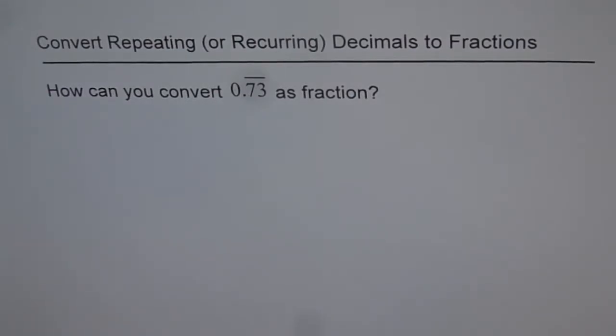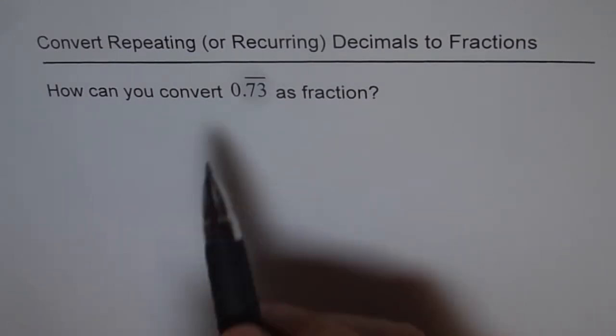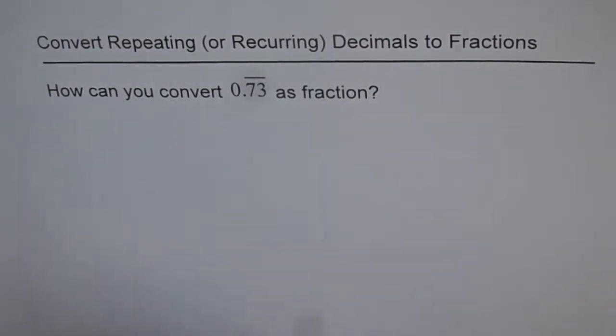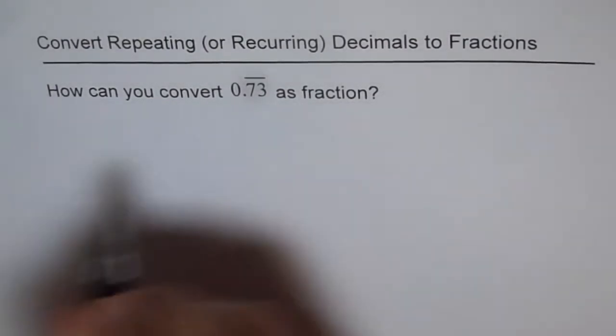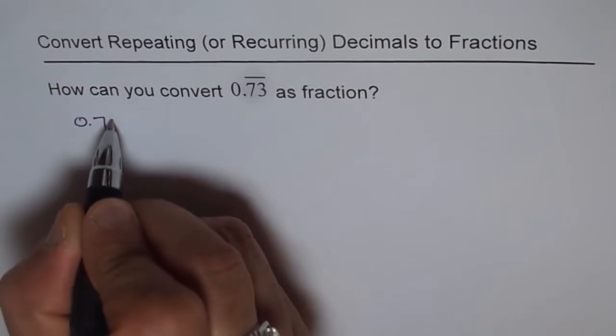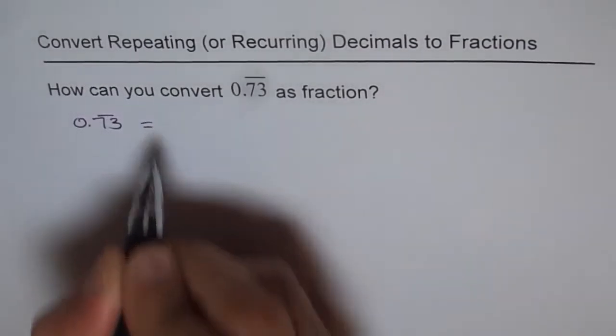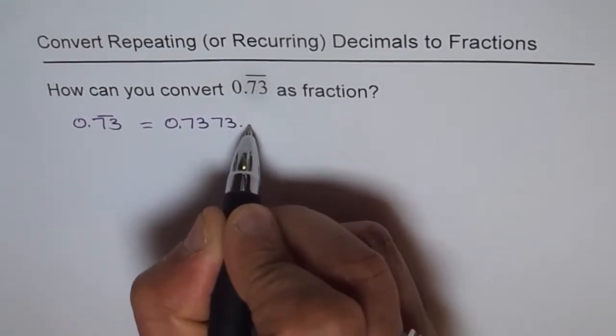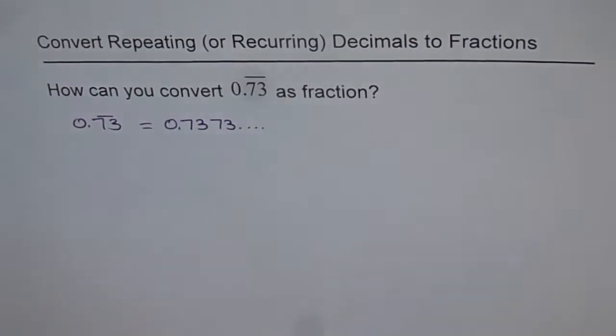Convert repeating or recurring decimals to fractions. How can you convert 0.73 recurring as a fraction? Now, 0.73 recurring can be written as 0.737373... repeating, right? And we'll try to understand how to write this as a fraction.